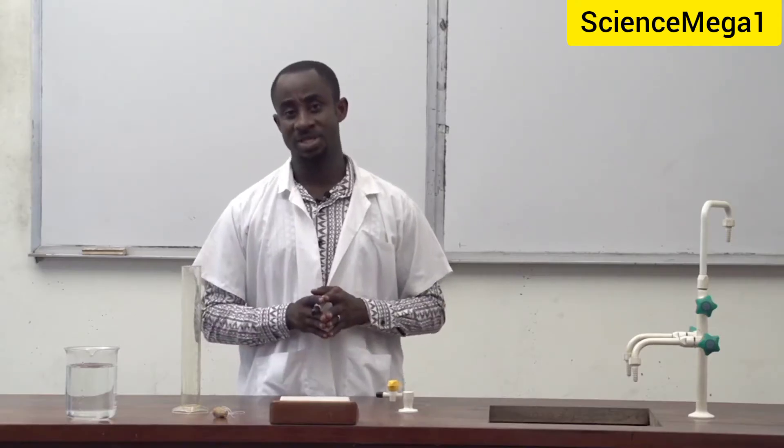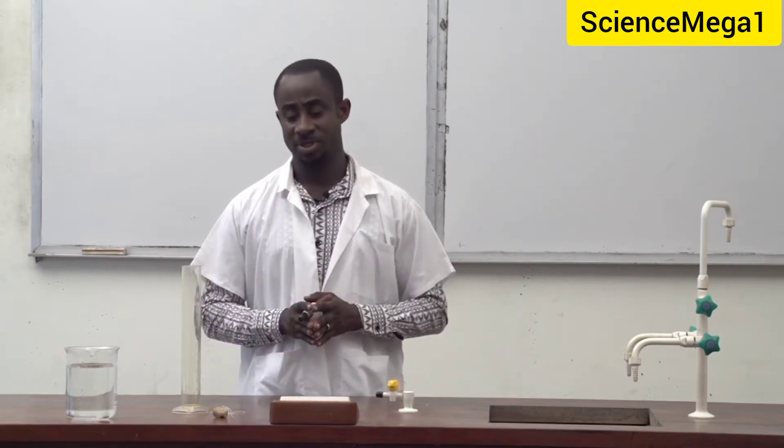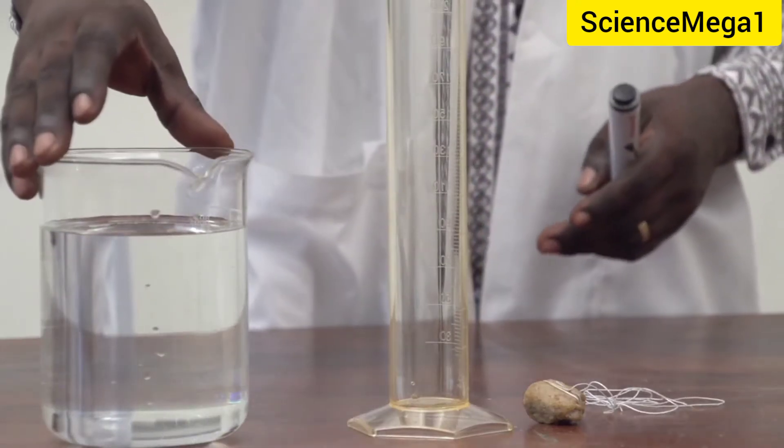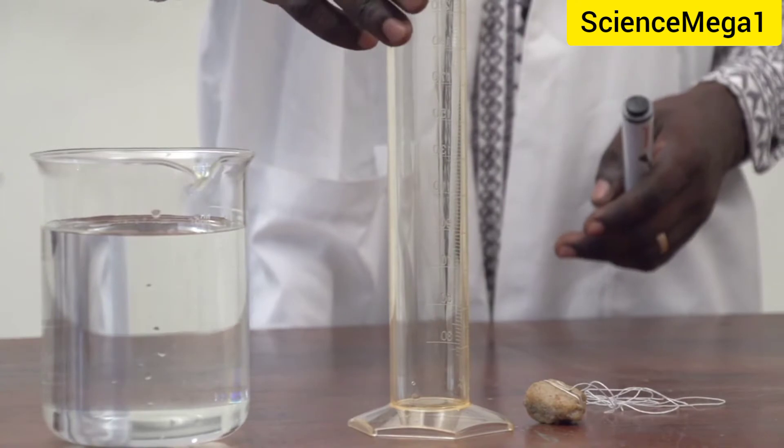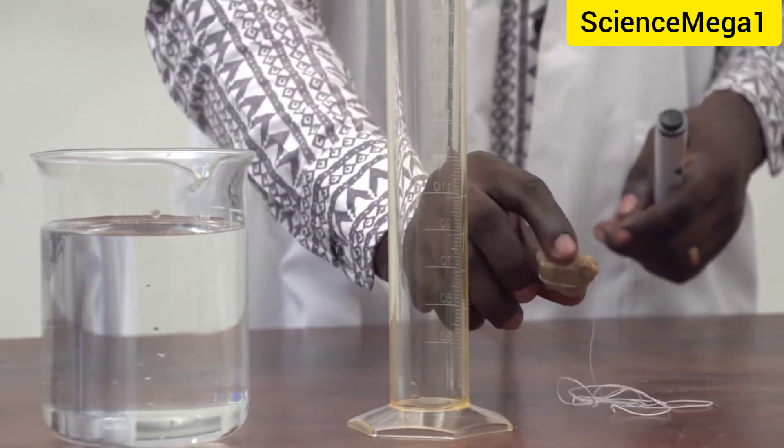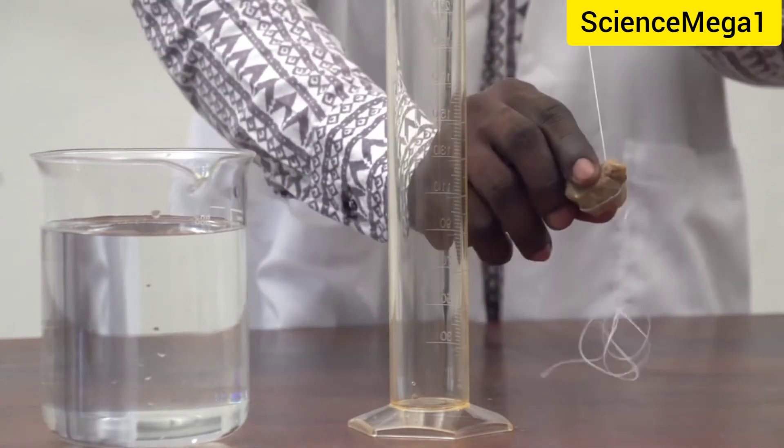To conduct this activity we need the following items. We have a beaker with water, we have a measuring cylinder, we have the irregular solid which is the stone tied with a thread or a string.